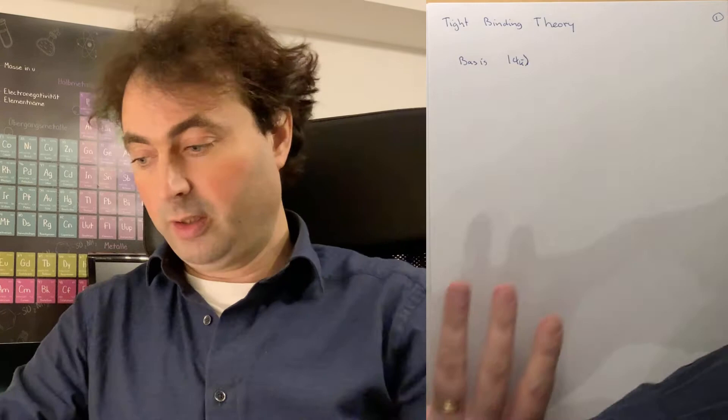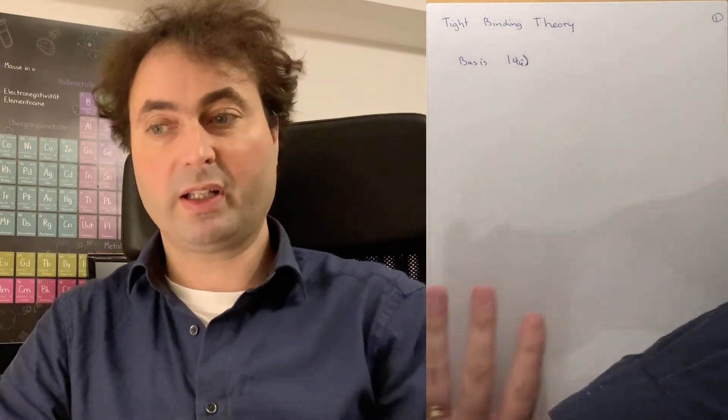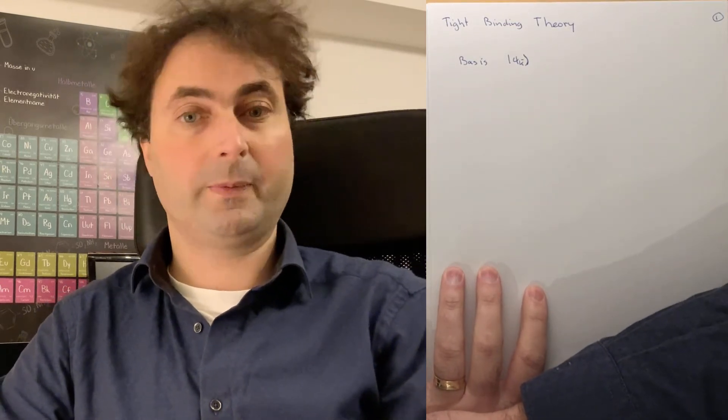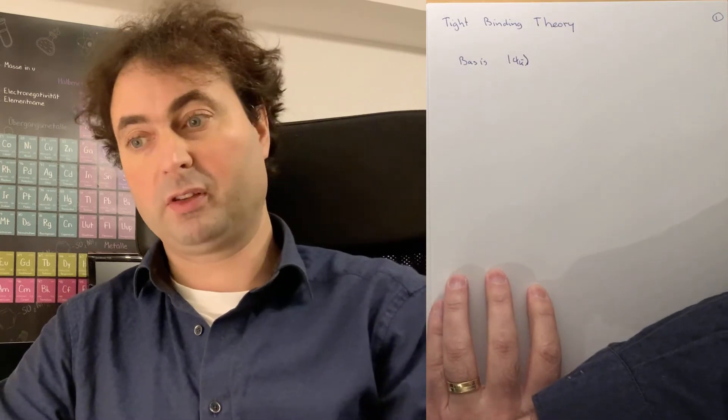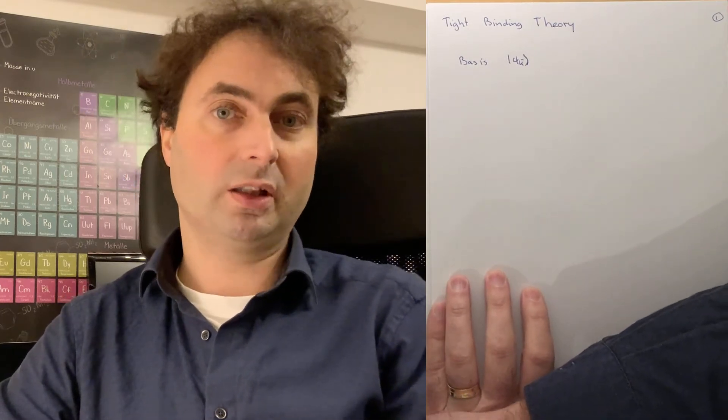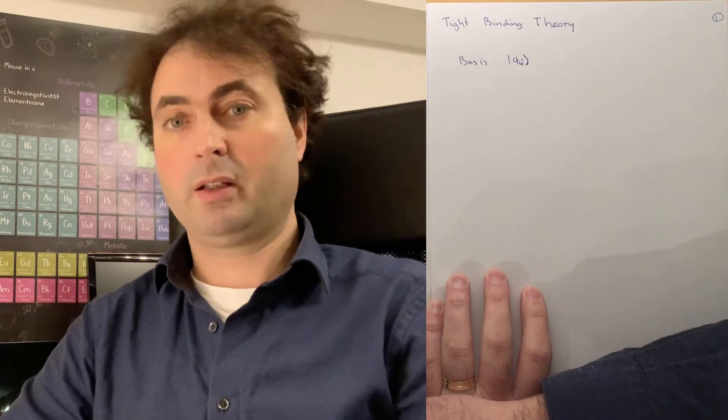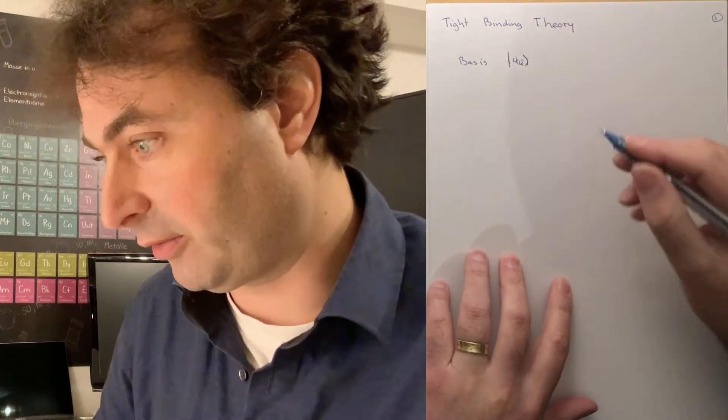We started with the free electron states in an empty space. Then we said, well, we have a crystal that has a periodicity. Then we folded our bands to crystal momentum. And then we said states with the same crystal momentum but different real momentum interact with each other, forming now the eigenstates, which are mixtures of states with momentum plus or minus reciprocal lattice vectors, and therefore form the bands that we have.